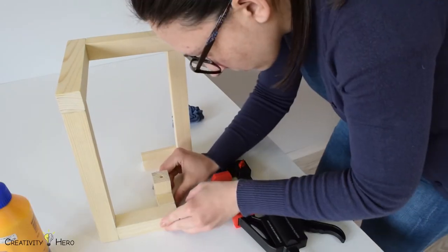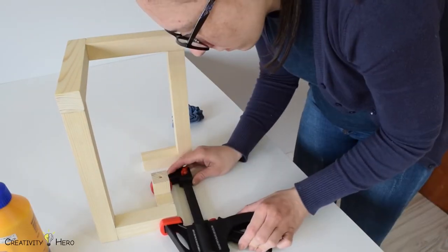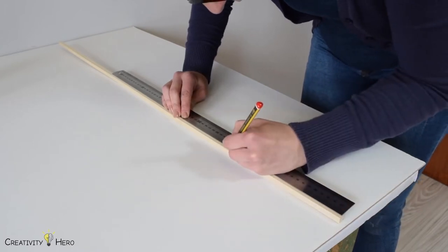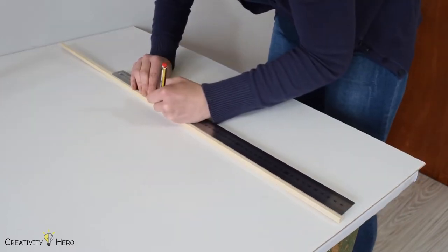Then I glued up this last piece of the lamp base. Now let's move on to the lampshade frame. I marked the dimensions of the second board.